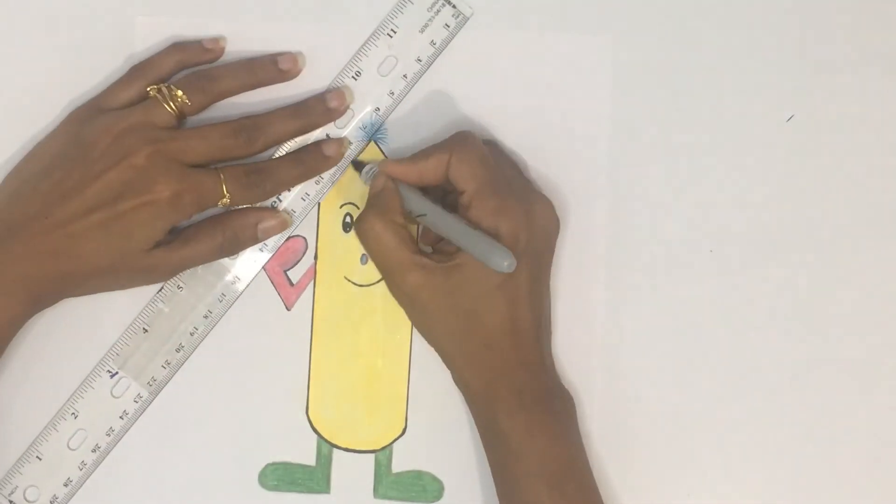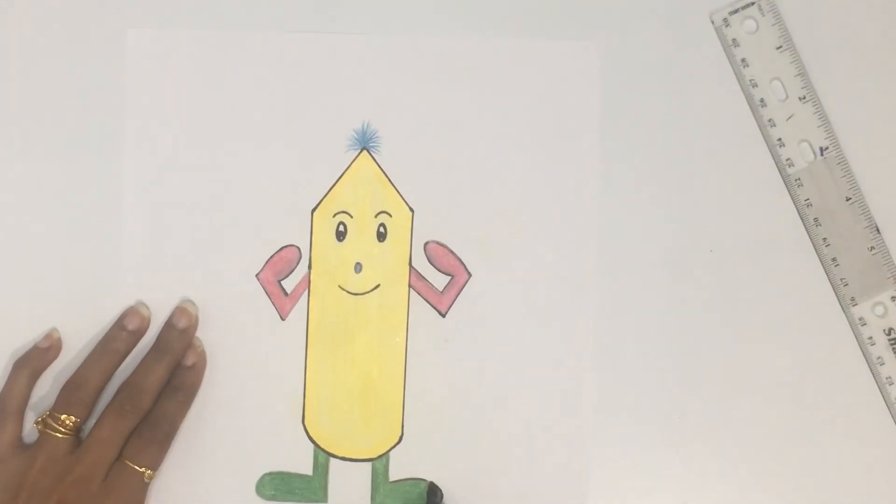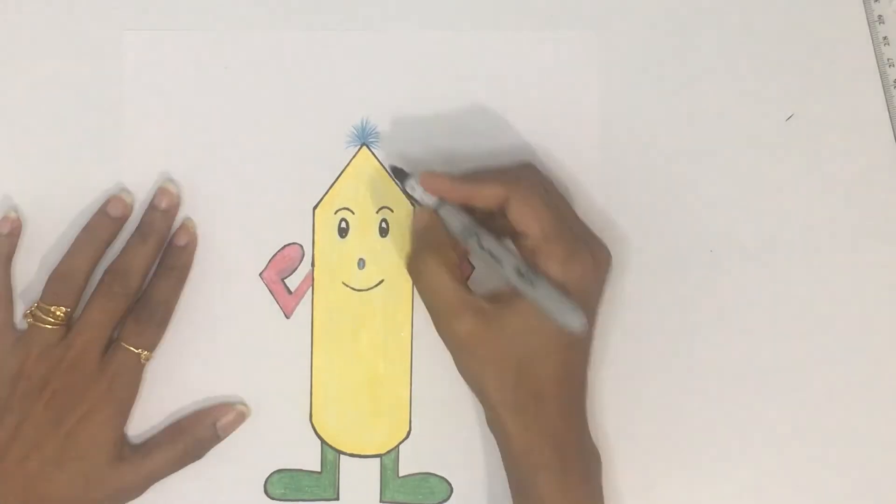The next interesting part is the hair portion that makes it more cute, isn't it? Finally, highlight with black sketch pen or Sharpie.